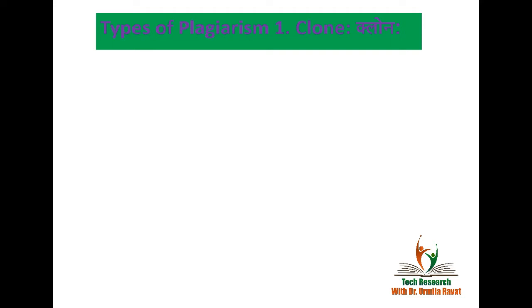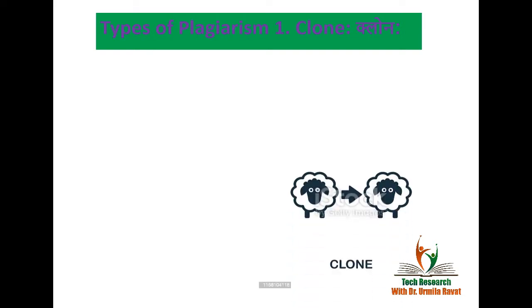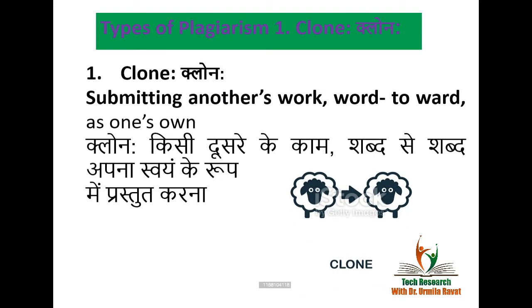Types of plagiarism. Friends, हम यहाँ साहित्यिक चोरी के प्रकार के बारे में डिस्कस करेंगे. The first one is Clone. Clone is submitting another's work word-for-word as one's own. यानि कि किसी दूसरे के काम को शब्द से शब्द अपने स्वयं के रूप में प्रस्तुत करना.